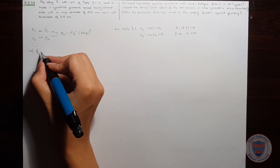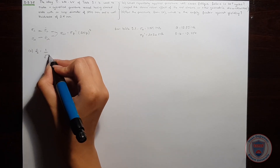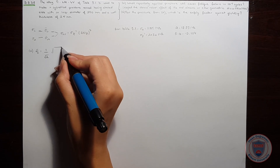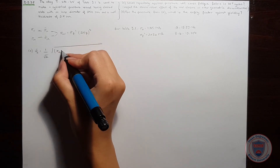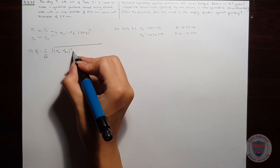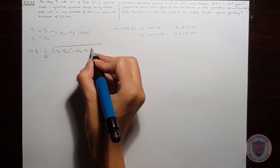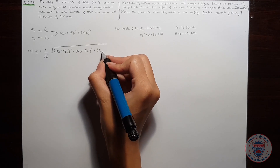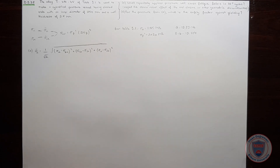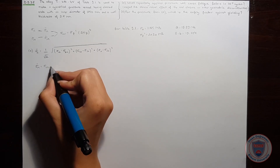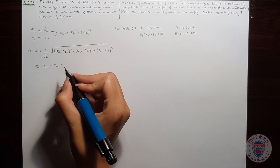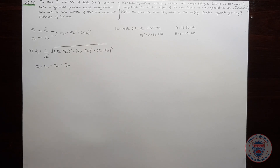Now let's start with part A. The equivalent stress amplitude is equal to 1 over the square root of 2, times the square root of (σ1a − σ2a)² + (σ2a − σ3a)² + (σ1a − σ3a)², where these are the principal normal stresses. The equivalent mean stress will be equal to the sum of the principal mean stresses. So we should first calculate the principal stresses.